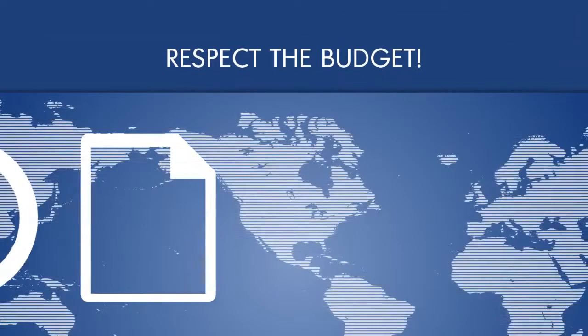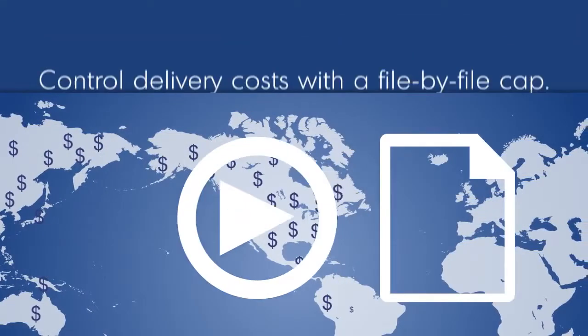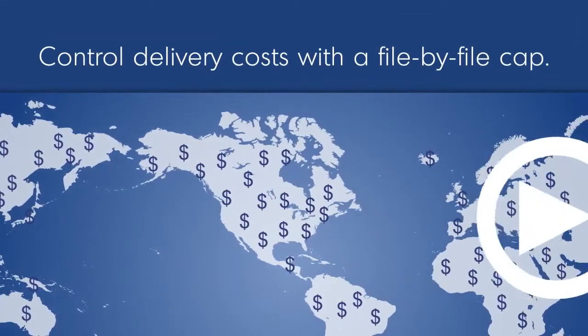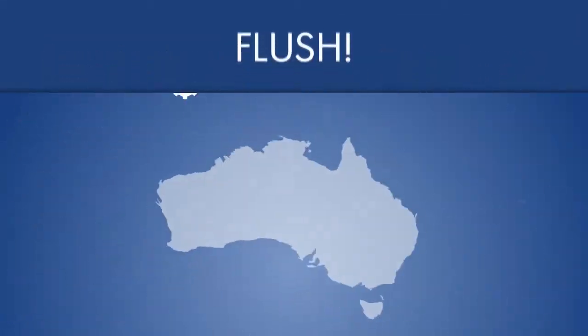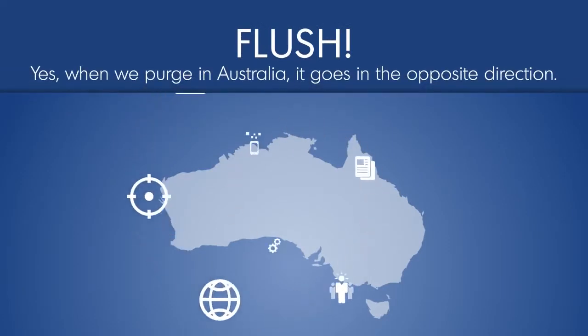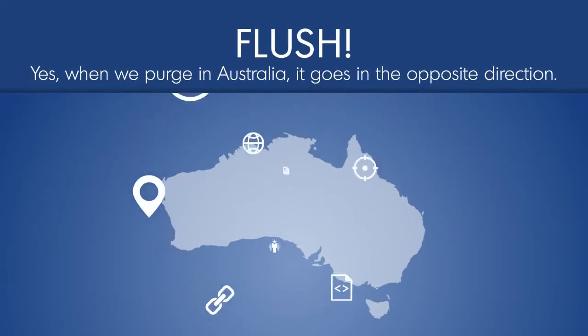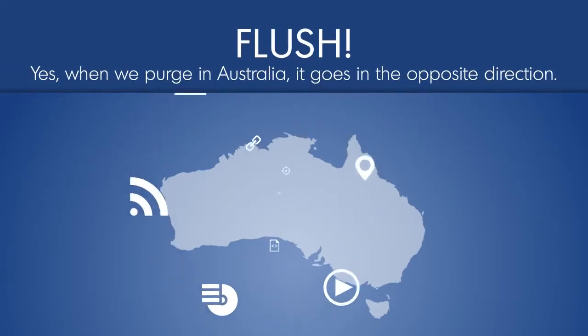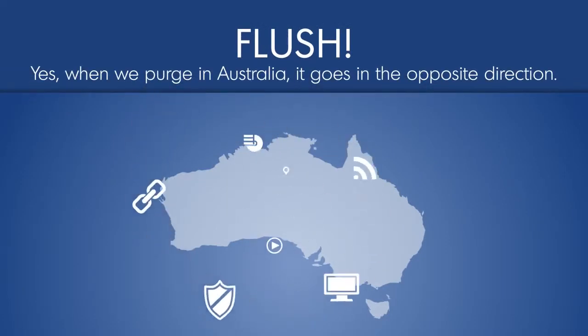Your story everywhere is great, until you get the bill. Need to get content out of cache quickly? Orchestrate Content Delivery gives you the ability to manually purge objects.